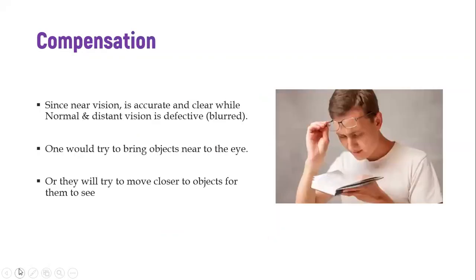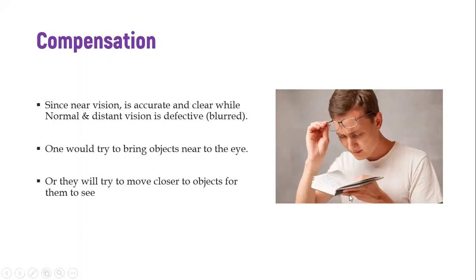Because the image forms in front of the retina, you need to compensate so that the image is actually focused at the retina. This is done by bringing objects closer to the eye or by moving closer to the object. Near vision is accurate and clear, while distant vision is blurry. That's why people bring books closer to their eyes, or if seated in class, they have to sit in front.